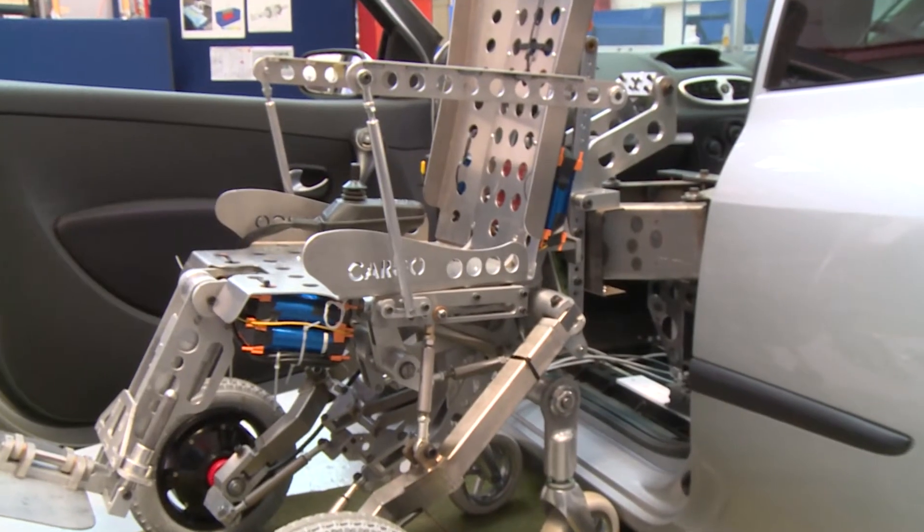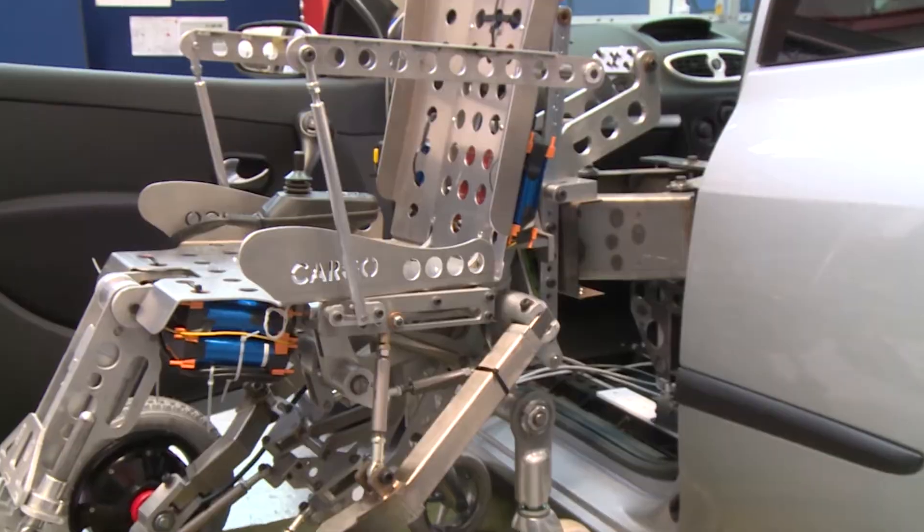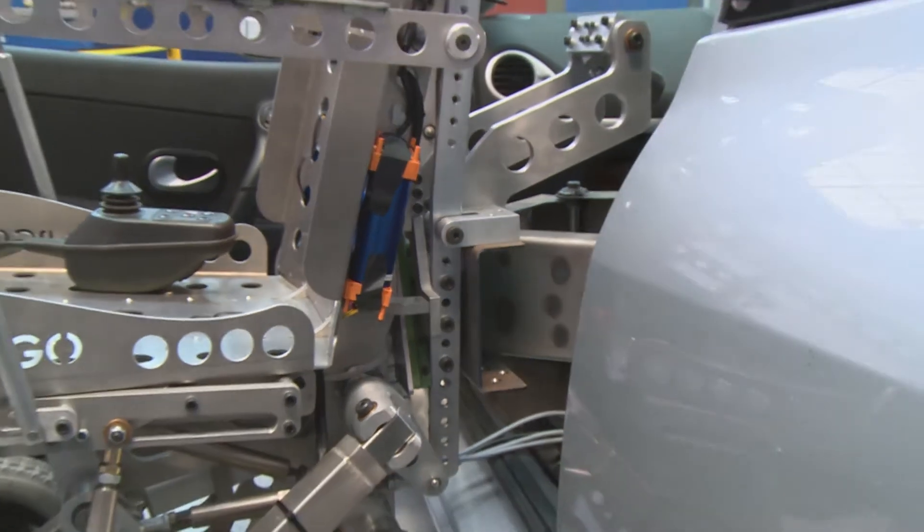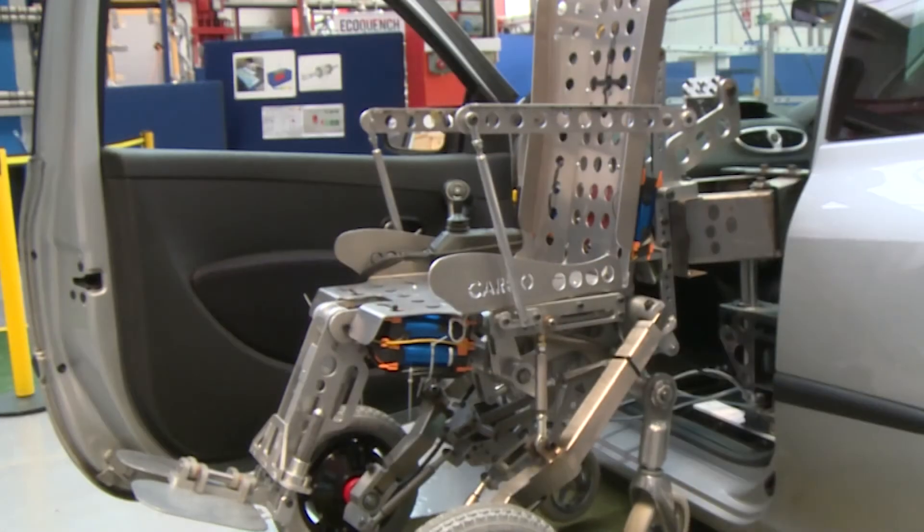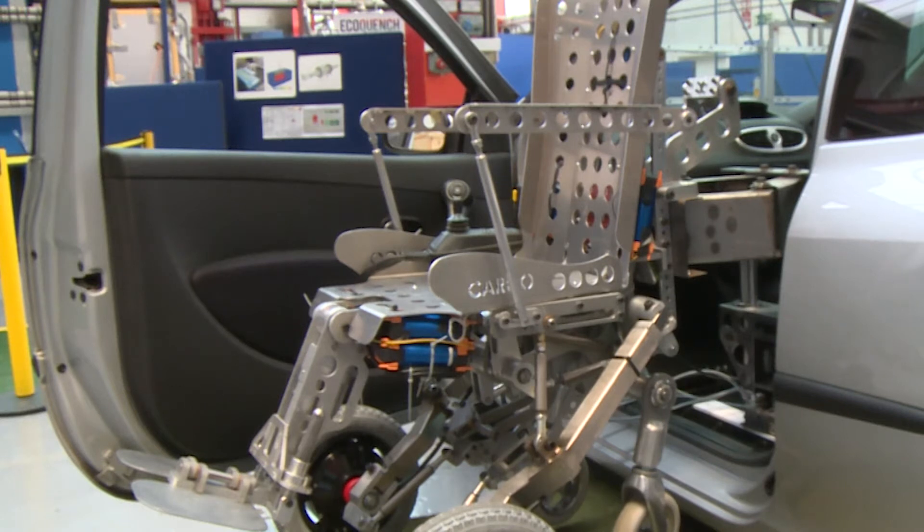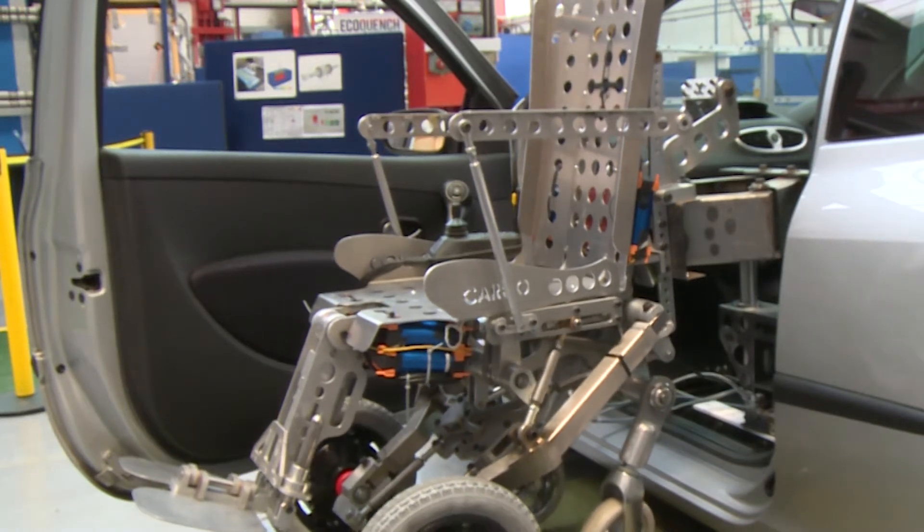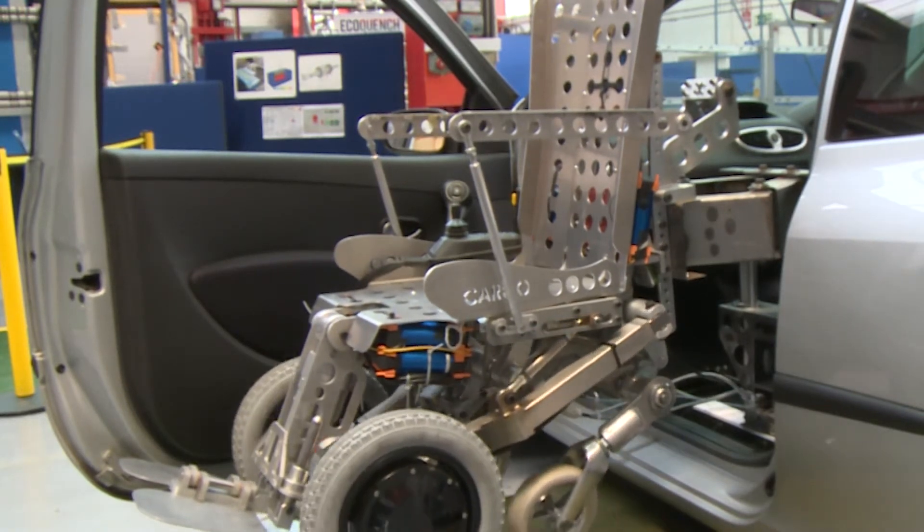The system works in three parts. The user and the wheelchair to start with would reverse up to the robotic arm that has been installed in the vehicle and would interface with the robotic arm so that the wheelchair and the user are secured to the car.